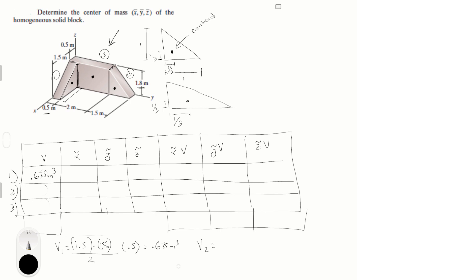The volume of the second part, which is the rectangular shape, is given by the length from here to here times the height times the width from here to here. So, that would be 2.5 times the height which is 1.8 times the thickness which is 0.5. And that is equal to 2.25 cubic meters.